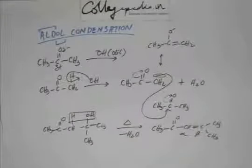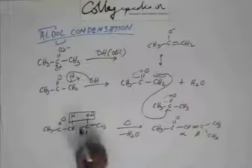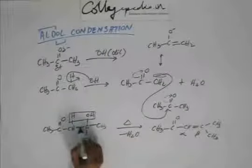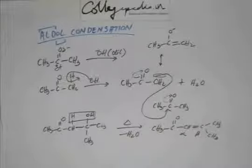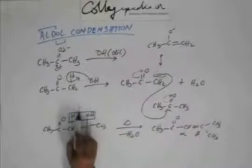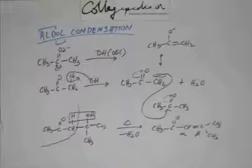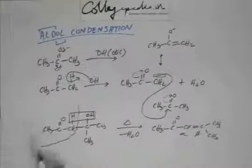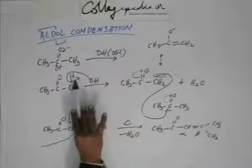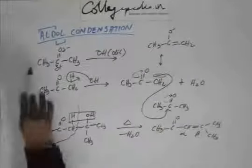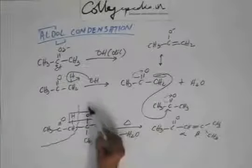Now the next thing to know: suppose you have been given the aldol and you have to identify which carbonyl compound resulted in this aldol. You have to learn to go backward. The way to quickly go backward is to divide the whole compound into two parts — one having the H and one having the OH. Then each part individually will give you the carbonyl compound. If you remove CH3COCH2, you add a hydrogen from your side because the base abstracted that hydrogen, so you have to add one more hydrogen. This gives you the ketone we started with.